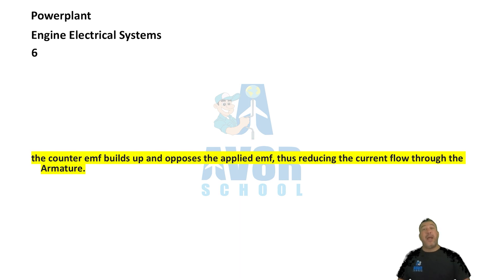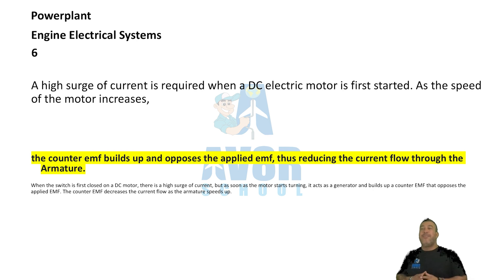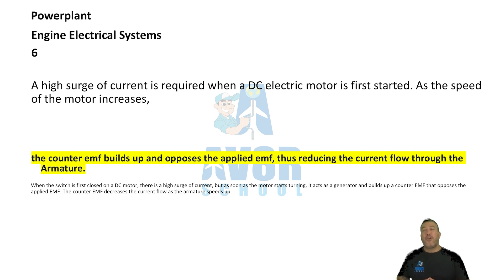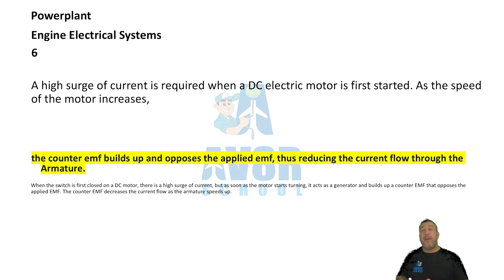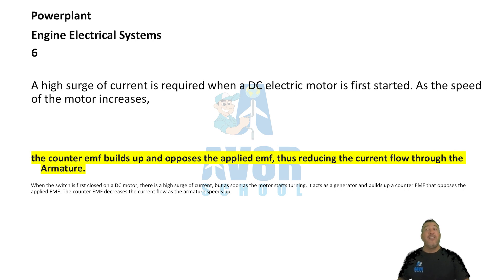Number 6. A high surge of current is required when a DC electrical motor is first started. As the speed of the motor increases, the counter EMF builds up and opposes the applied EMF, thus reducing the current flow through the armature.